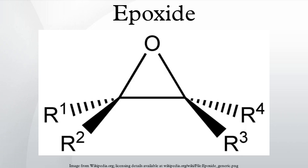Simple epoxides are named from the parent compound ethylene oxide or oxirane, such as in chloromethyloxirane. As a functional group, epoxides feature the epoxy prefix, such as in the compound 1,2-epoxycycloheptane, which can also be called cycloheptene epoxide, or simply cycloheptene oxide.